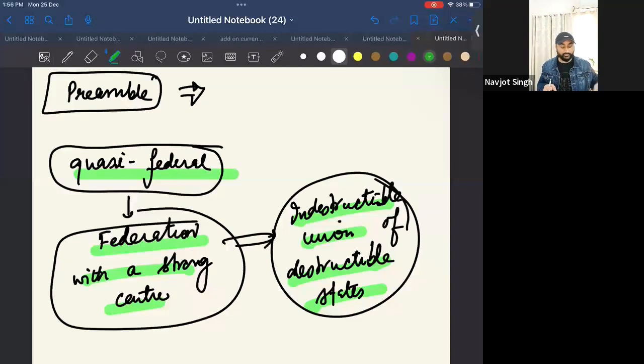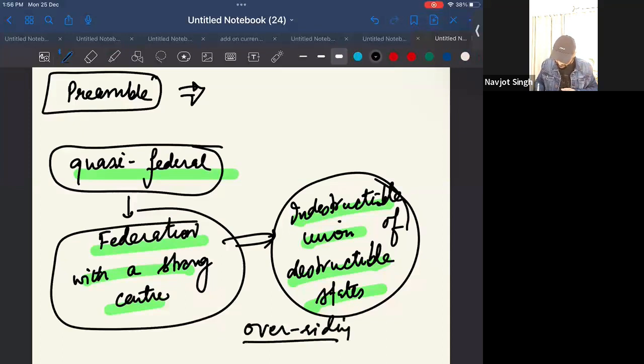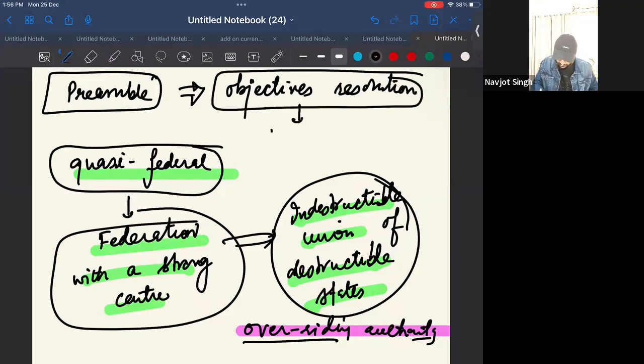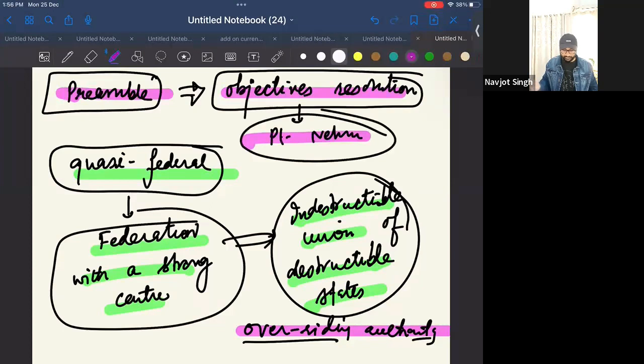We also have certain powers to states in certain matters. But overall the overriding power, overriding authority remains with the center. So, I think, is that clear? That was kind of adapted into the preamble.